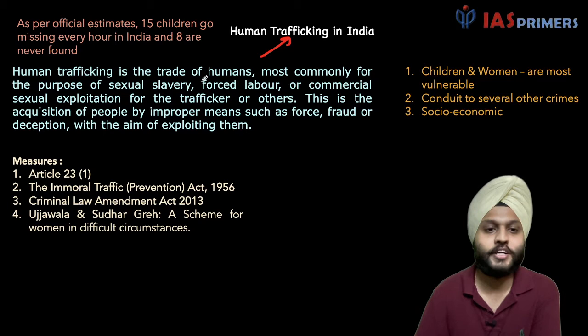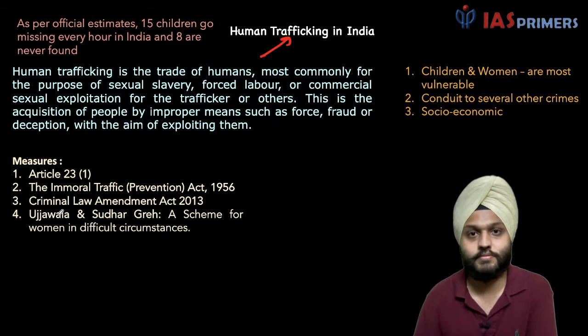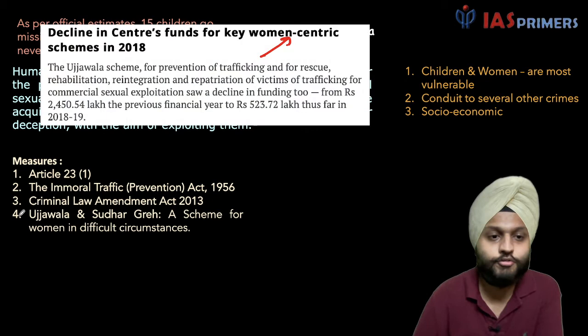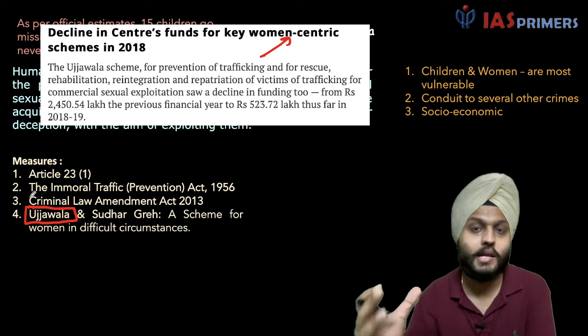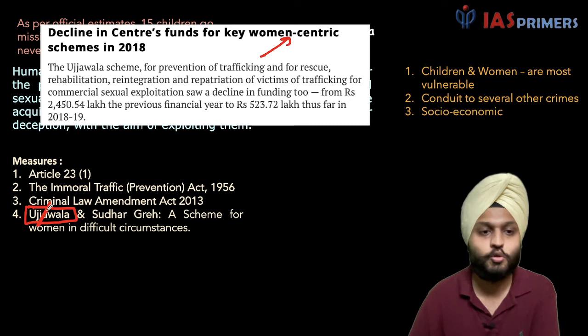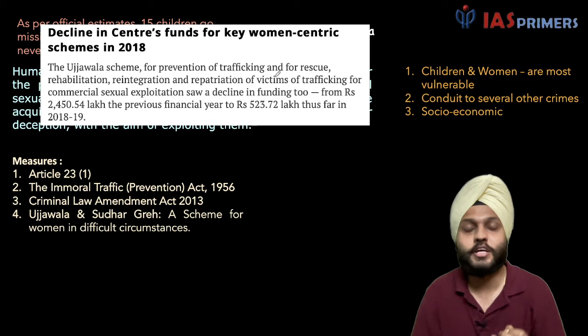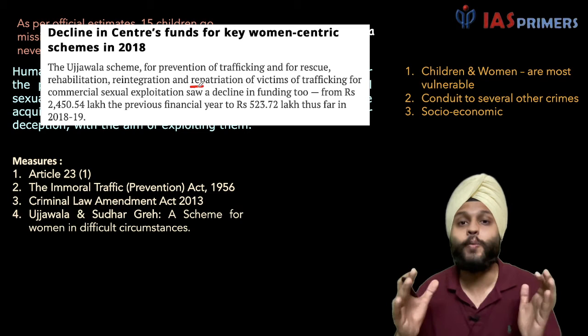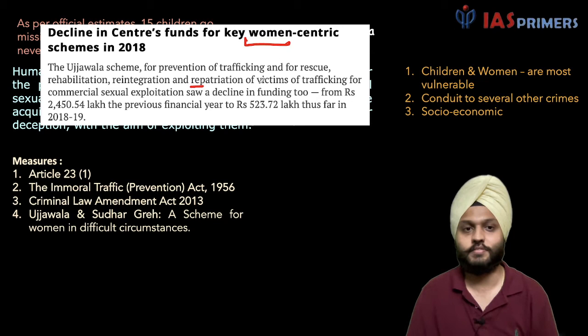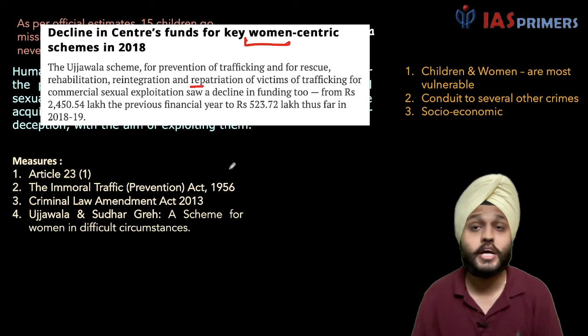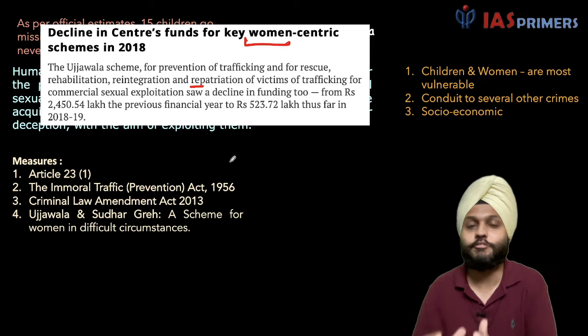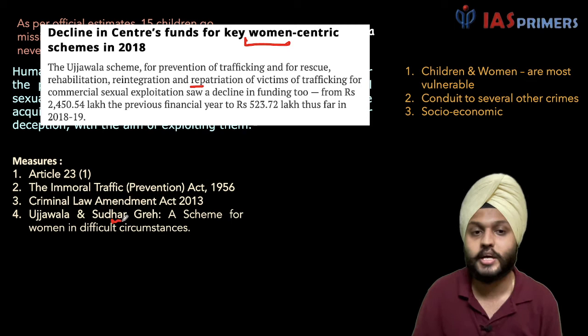Now, some schemes that the government has introduced for human trafficking. Two important ones are Ujjawala and Sudhar Griha — griha means house. You have to be careful: there is one scheme called PM Ujjwala Yojana about LPG — that has a different spelling. This particular scheme, Ujjawala, is about prevention of trafficking, rescue, rehabilitation, reintegration, and repatriation of victims — primarily women victims of human trafficking. Next is Sudhar Griha, for women who are from extreme poverty or victims in very difficult circumstances.